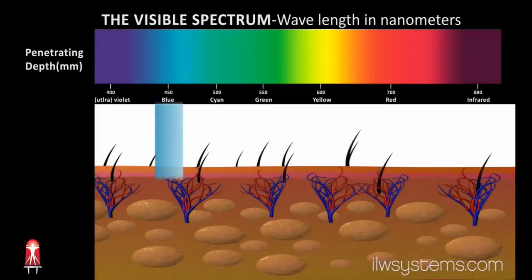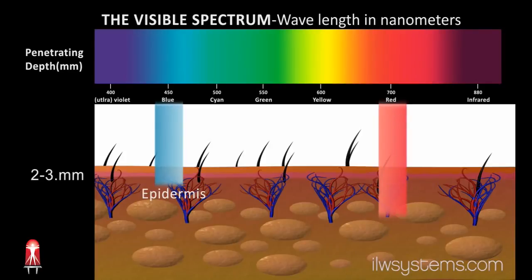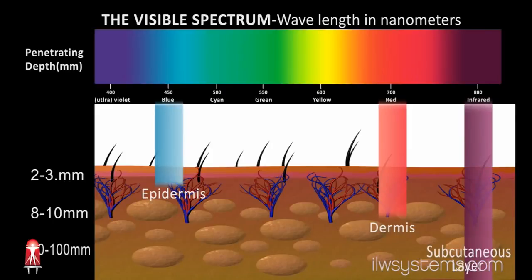Light near the blue end of the spectrum penetrates about two to three millimeters. Light at the red end of the spectrum penetrates about eight to ten millimeters. And near-infrared light penetrates about 20 to 100 millimeters.